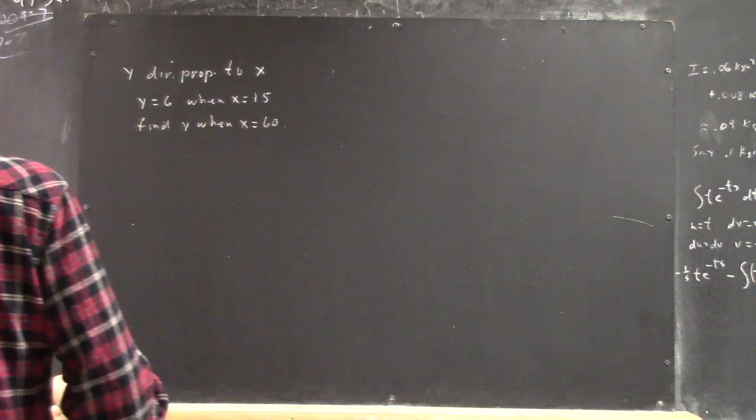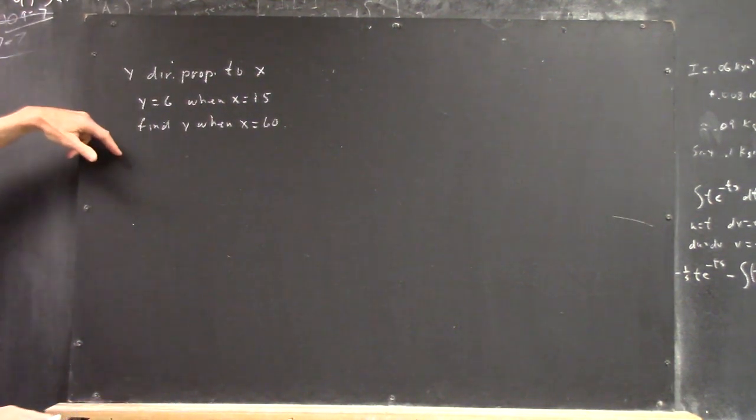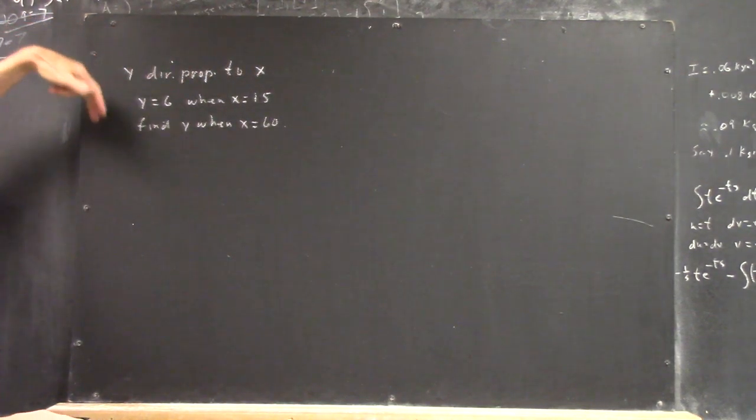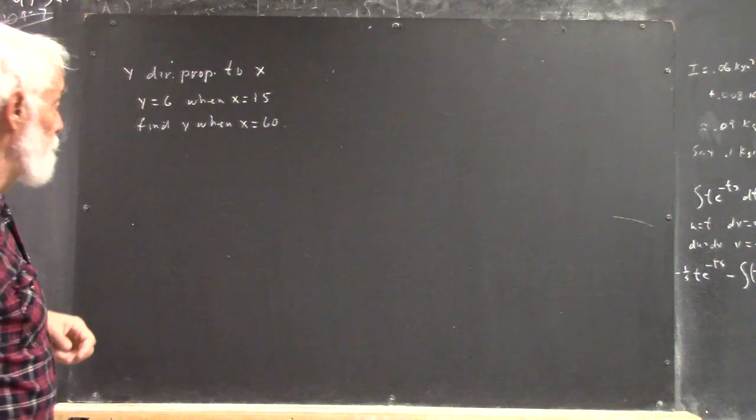Okay, talk a little bit about proportionality and variation. Here's the problem. Y directly proportional to x. Y is 6 when x is 15. Find y when x equals 60.